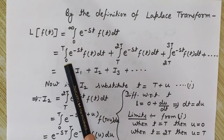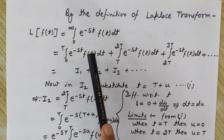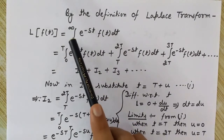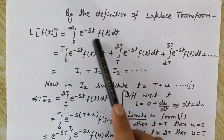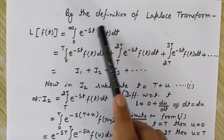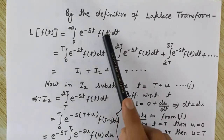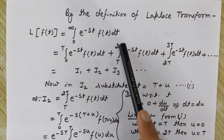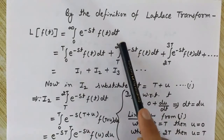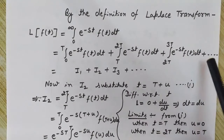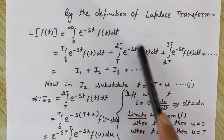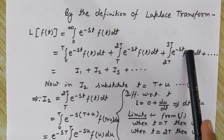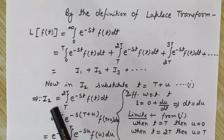Since f(t) is a periodic function, the integral from 0 to infinity has been divided into intervals: 0 to T, T to 2T, 2T to 3T, and so on. I have named these parts I1, I2, I3, and so on.